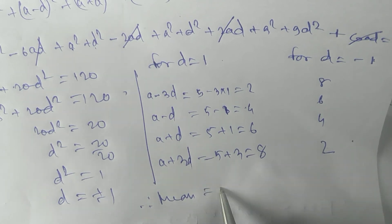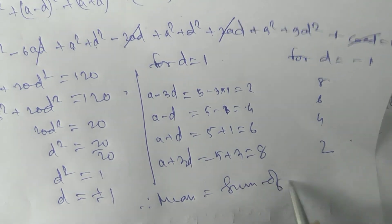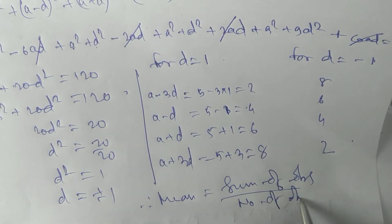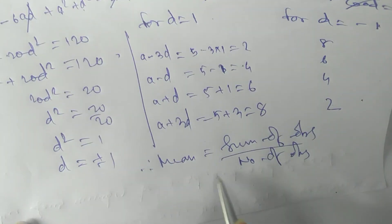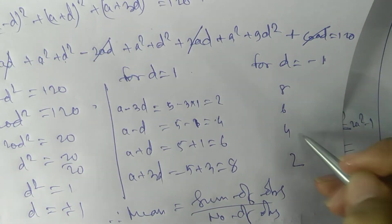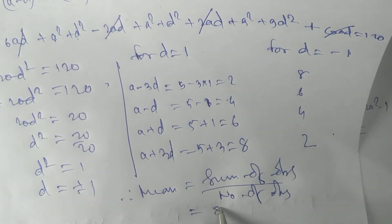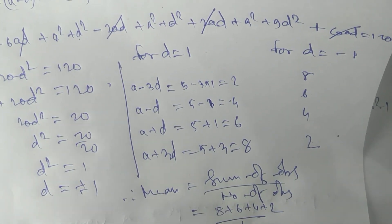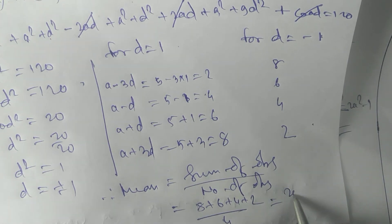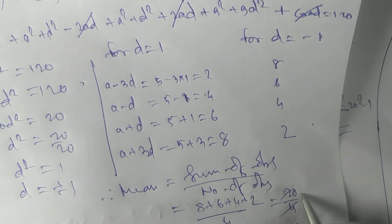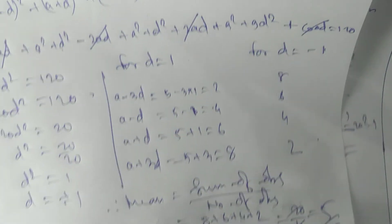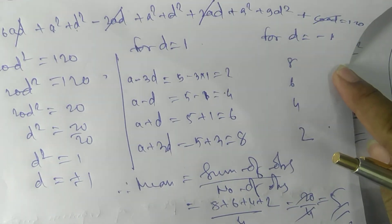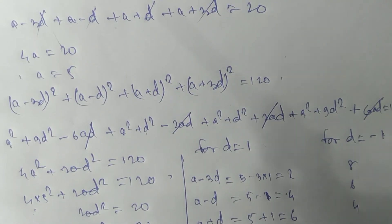Therefore the mean = sum of observations / number of observations = (8 + 6 + 4 + 2) / 4 = 20 / 4 = 5. Our mean is 5. Thank you.